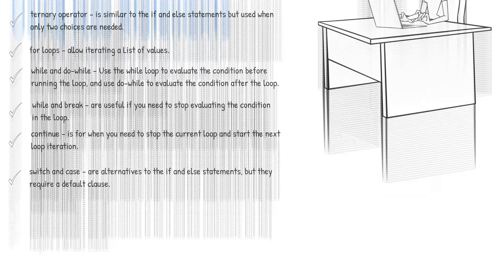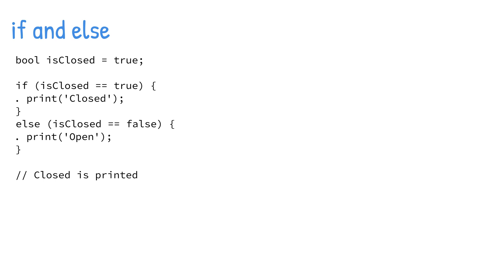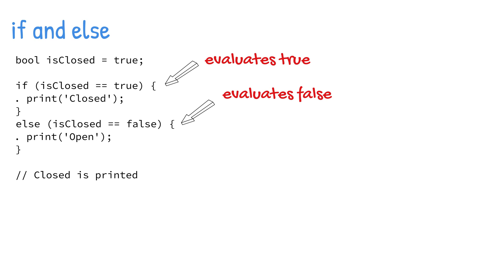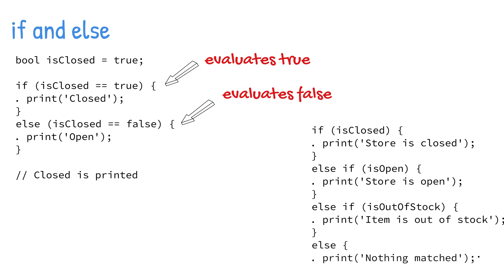The if statement compares an expression and if true, it executes the code logic. The expression is wrapped by open and close parentheses, followed by the code logic wrapped in braces. The if statement also supports multiple optional else statements used to evaluate multiple scenarios. There are two types: else-if and else. You can use multiple else-if statements, but you can only have one else statement, usually used as a catch-all scenario.